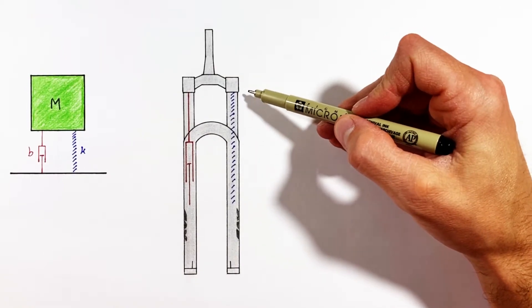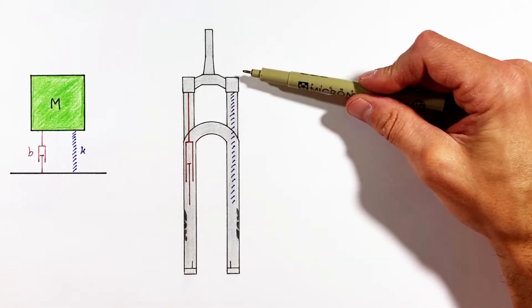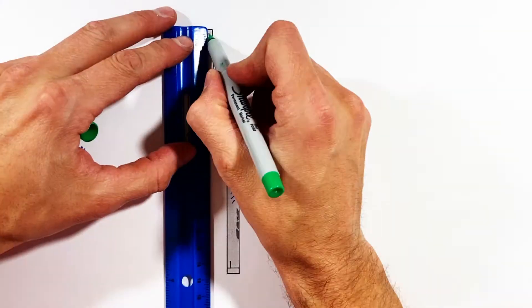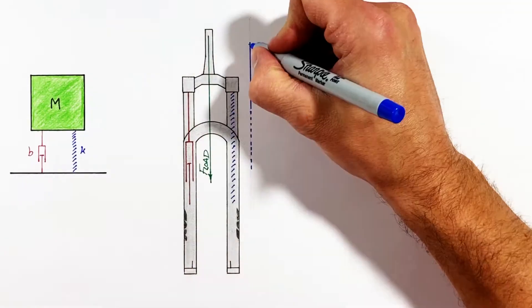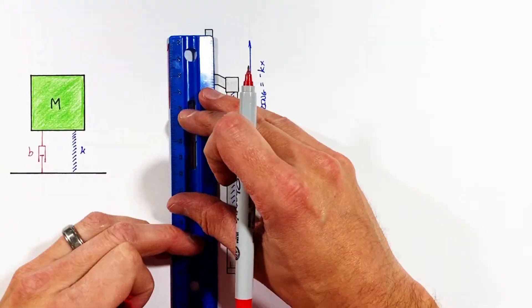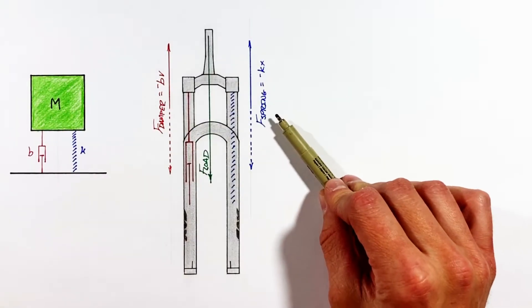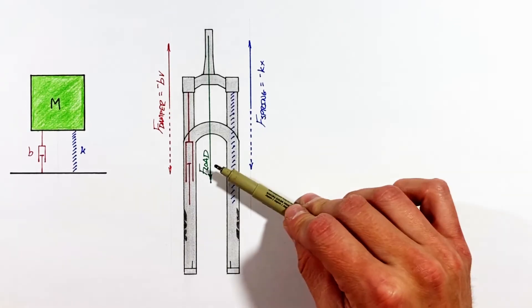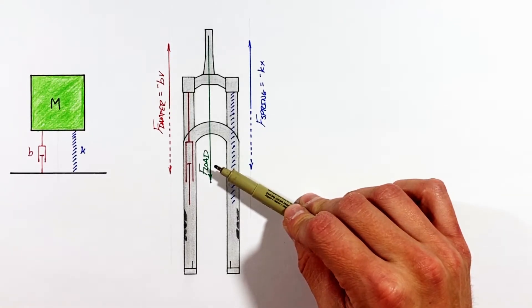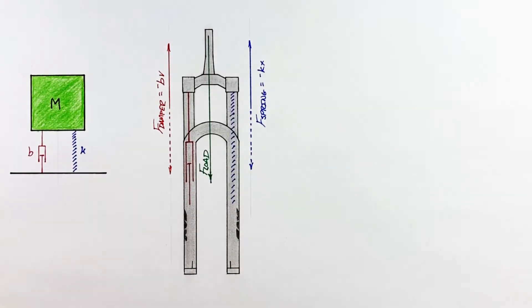So we have the force by the damper, the force by the spring, and last there's an external force which in this case is the weight of the bike and the rider. So now that we've identified the forces at work here, let's insert them into Newton's second law.